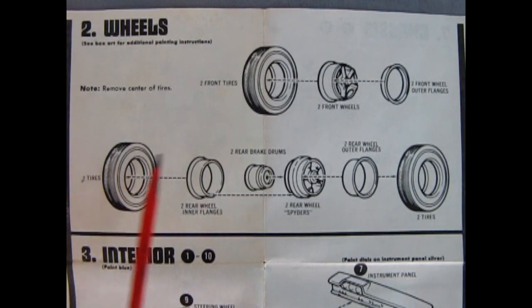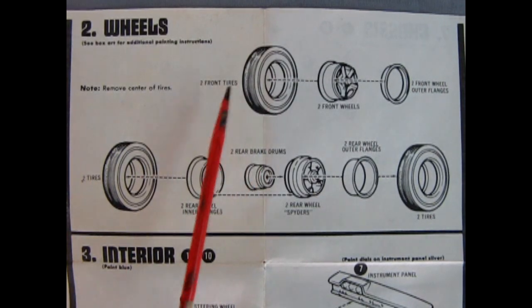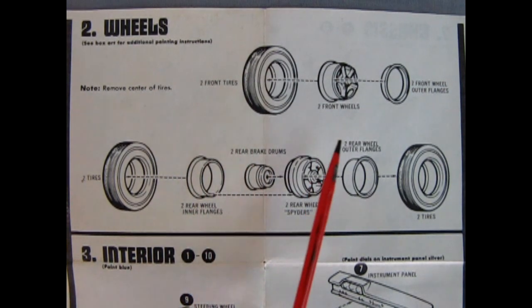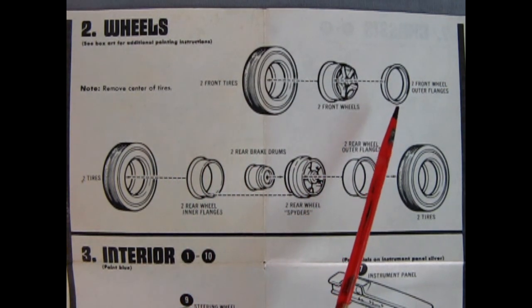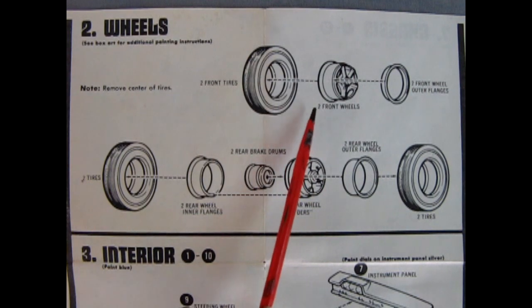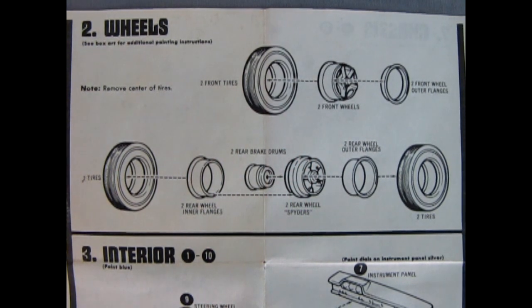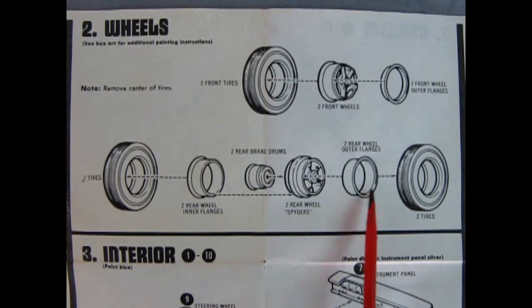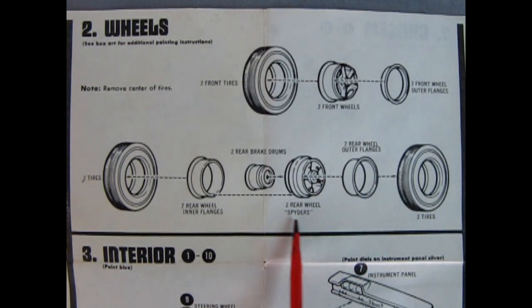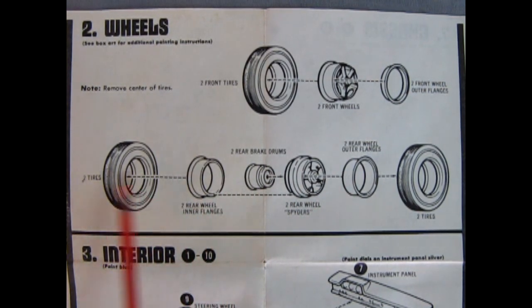Step two shows our wheel assemblies going together. The front has a single set of tires and the back has dualies. So here we have our two front wheel outer flanges, our two front wheels, and the two front tires. Down below we have our two tires, the two rear wheel outer flanges, the two rear wheel spiders, two rear brake drums, two rear inner flanges, and then our tire in the back.